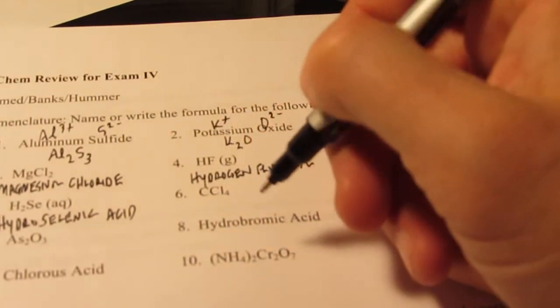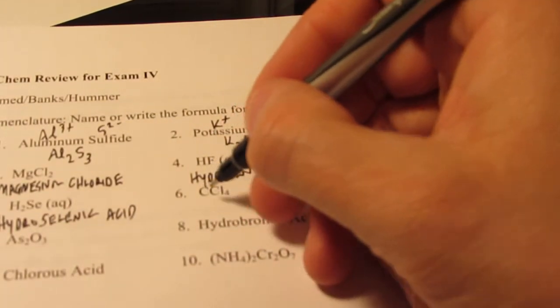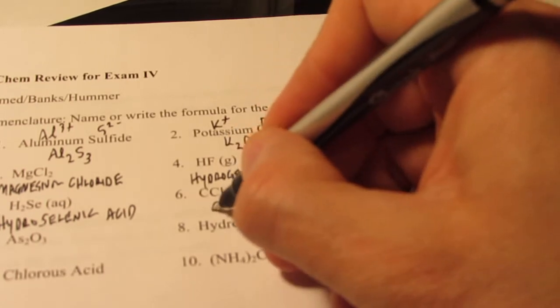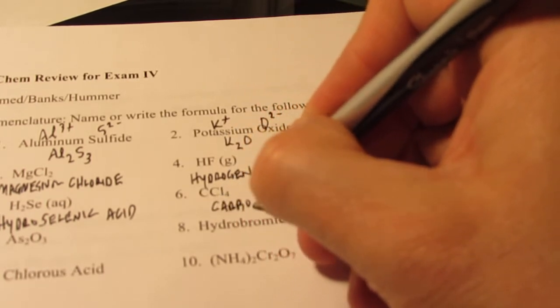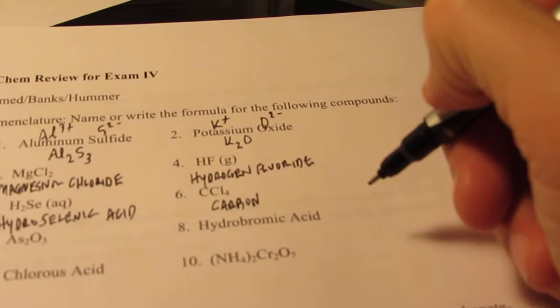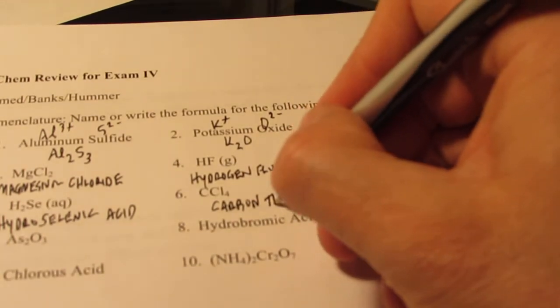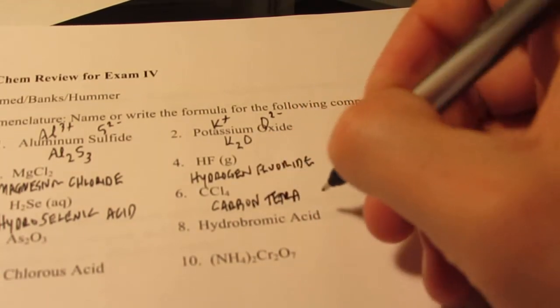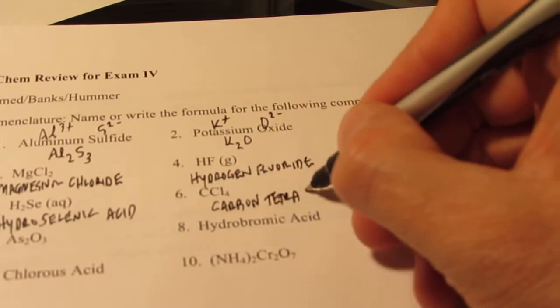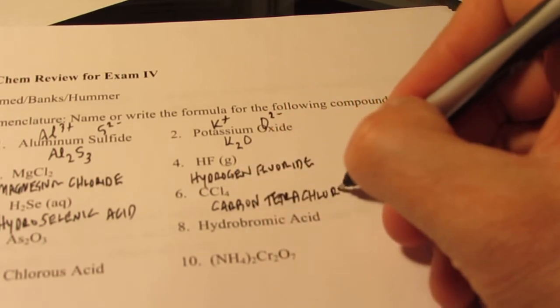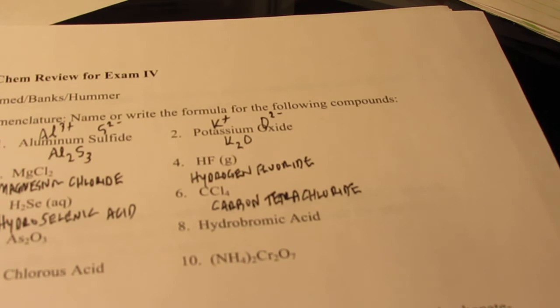CCl4, two non-metals. So we're going to use our prefixes. We don't need to use a prefix mono for one. We can just say carbon. But do you remember what the prefix for four is? That's right. Tetra. So carbon tetra, that's chlorine. But remember, all binary compounds end with ide. So it's tetrachloride. Carbon tetrachloride.